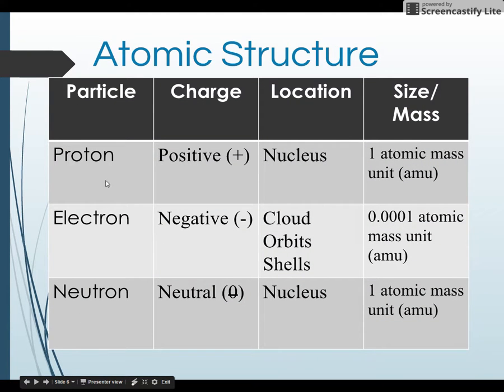Protons have a positive charge—P, proton, positive—and they're found in the nucleus, and they have a size or mass of one atomic mass unit. Electrons have a negative charge and they can be found in the cloud, orbiting in shells around the nucleus, so they're on the outside of the atom.